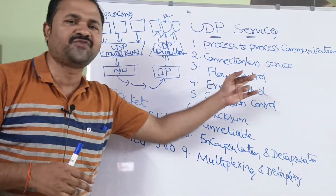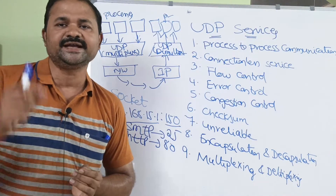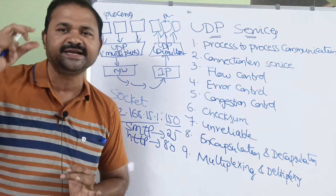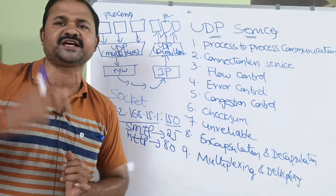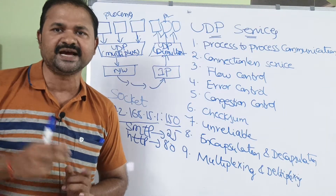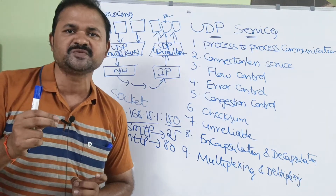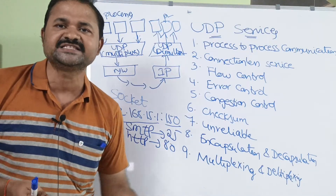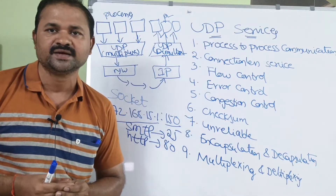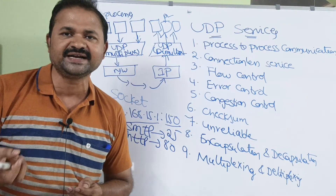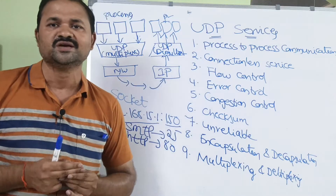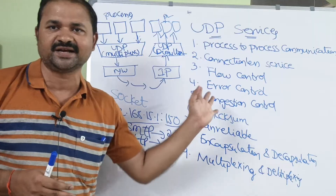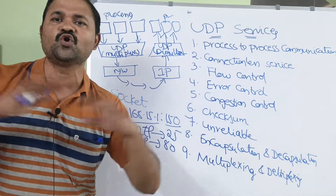The third one is flow control. In UDP there are no flow control mechanisms. So the sender can send data at a very faster rate. Assuming that the receiver consumes the data at a slower rate, the sender is sending data at a faster rate whereas the receiver is consuming data at a slower rate. So the buffer will overflow and packets may be lost. But there is no flow control mechanism in UDP.